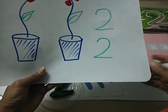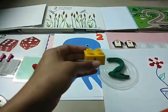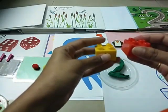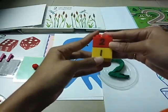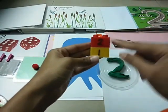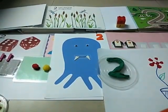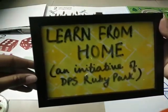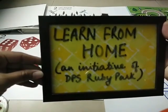That's number two — very good! One more time — that's number two. I have also got two blocks — let's put them together: one, two — two blocks. I hope you enjoyed this series of Learn from Home, an initiative of DPS Ruby Park. Stay home, stay healthy, stay safe!